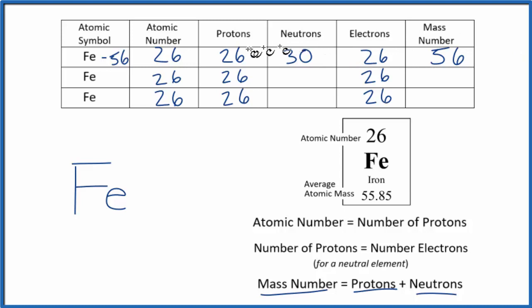About 92% of iron, if you had a block of iron, 92% of the atoms would have 30 neutrons and a mass number of 56. Another isotope of iron is iron 57.